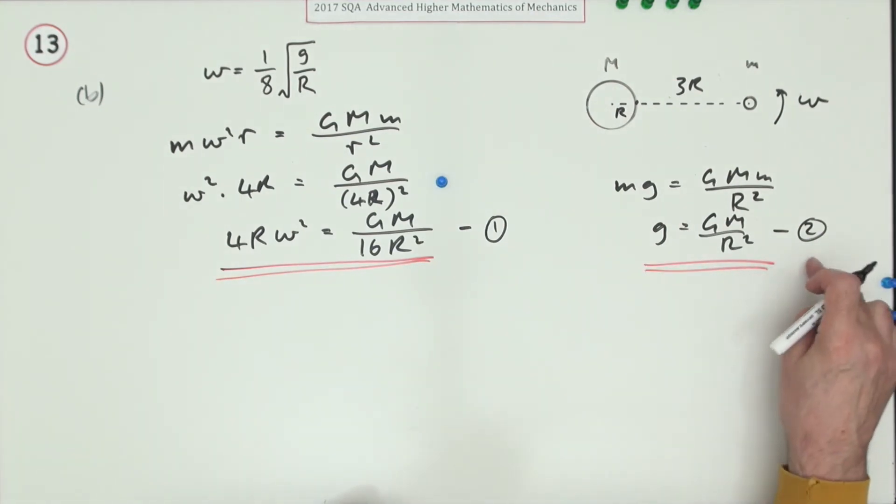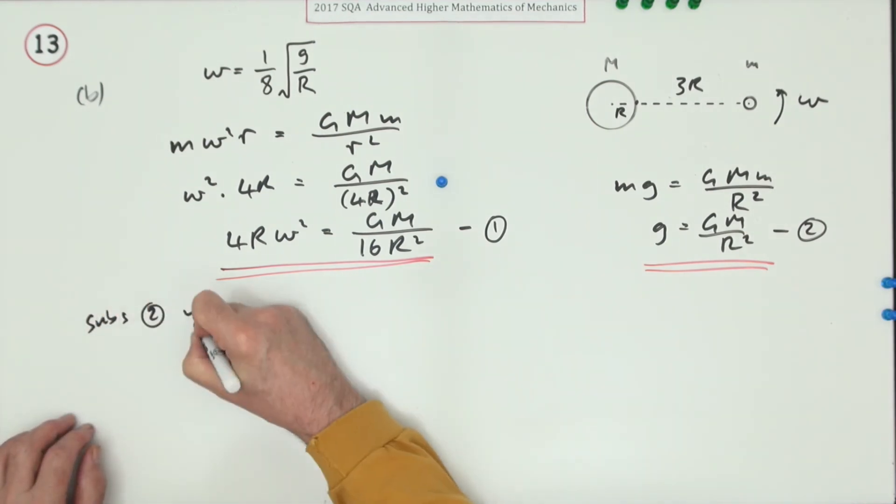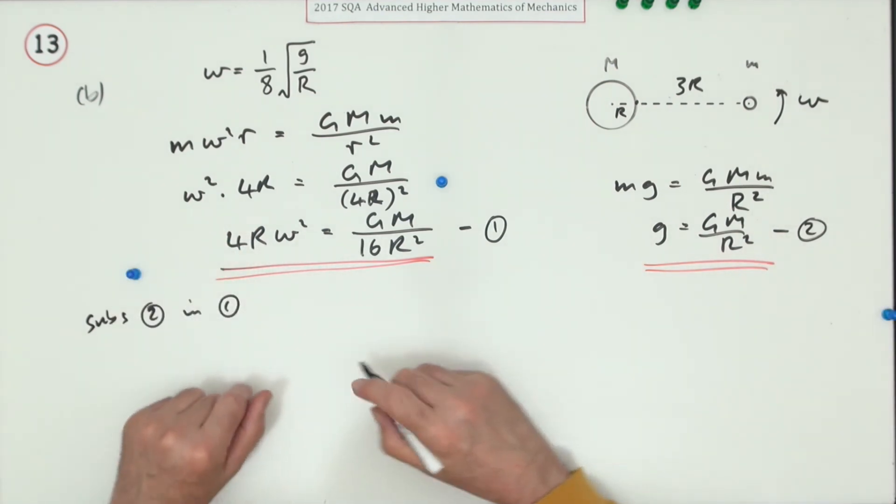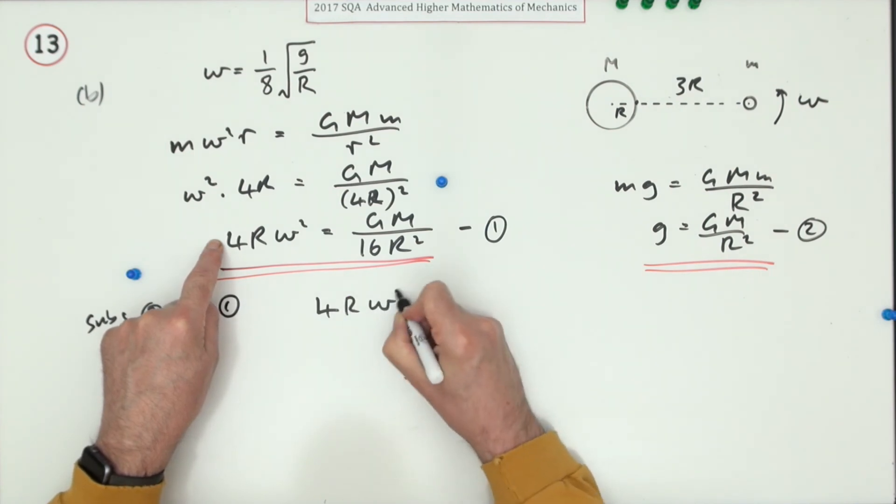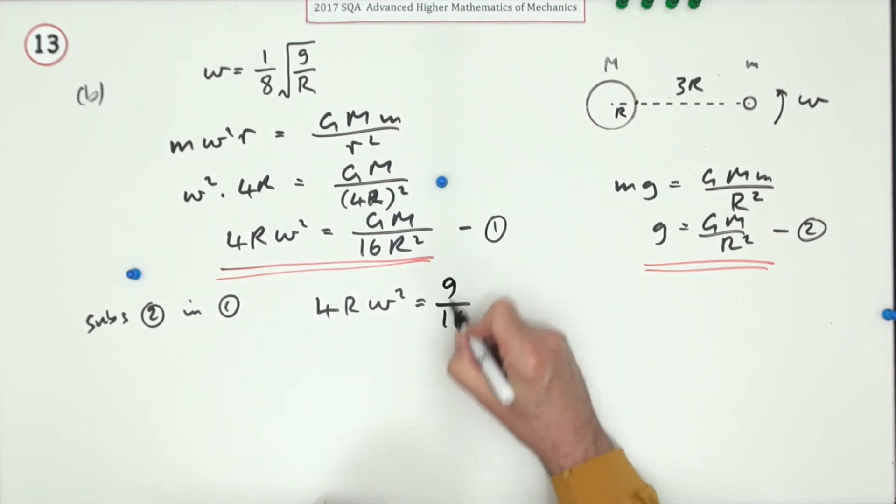Now it's just a case of substitute that in this. So substitute equation 2 in equation 1, which effectively would be the third mark. I know they've done it slightly differently. It means you've got this: 4r omega squared equals, now GM over r squared gets replaced with g, so g over 16. Because you're almost there, so omega squared will be g over 64r.